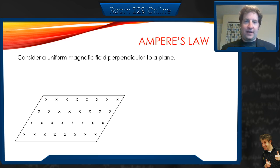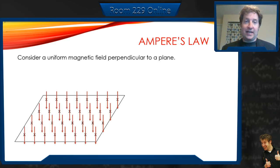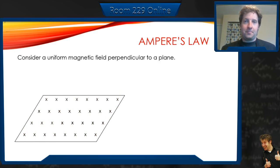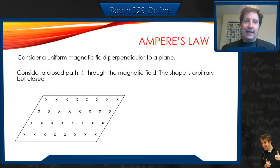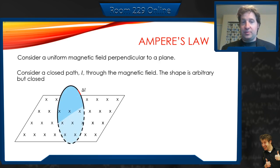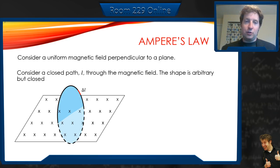Let's start with Ampere's law. First, consider we have a uniform magnetic field. I've drawn a plane with little X's that represent the magnetic field going down — the X's mean we're looking at the back end of the arrows. So we have this nice uniform magnetic field, this B field, all facing down. Now I'm going to create a closed loop through this magnetic field. The shape of that loop is arbitrary, as long as it's closed, meaning it comes back onto itself. The orientation of the loop really doesn't matter either.